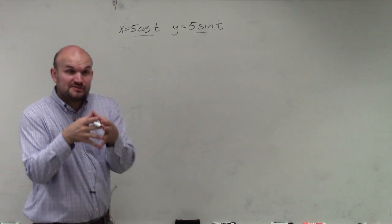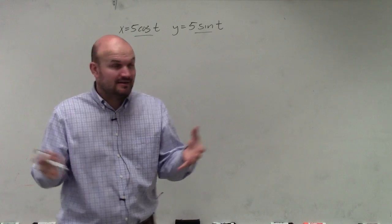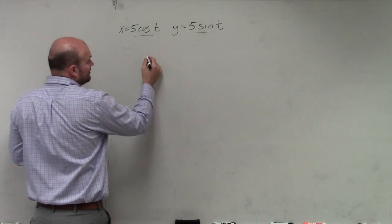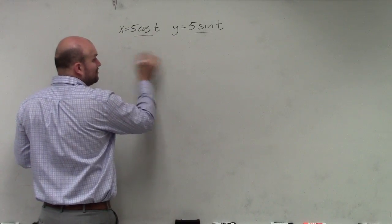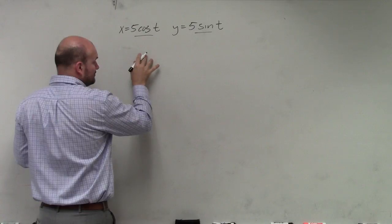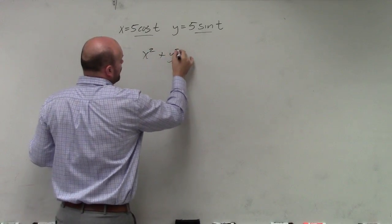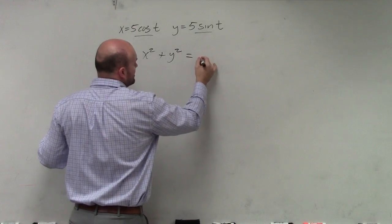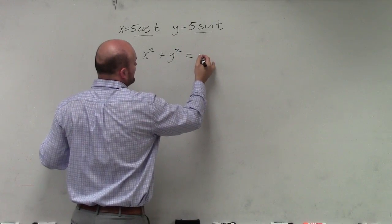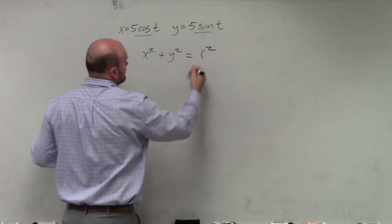So if I want to write the equation of a circle without cosine and sine, or without t, because I know that the parametric function in linear form, that's going to be x squared plus y squared equals—basically, you can think of this as r squared.